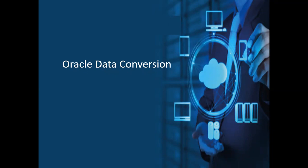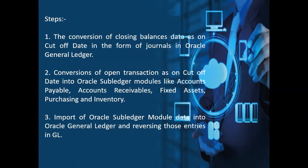Data conversion happens whenever you go for a fresh implementation of Oracle ERP. You need to extract the data from the legacy system and then upload that into Oracle. The first step is the conversion of the closing balance data as of a cutoff date in the form of journals in Oracle General Ledger — you need to extract the trial balance from the legacy system and upload it as a WebADI journal in General Ledger.